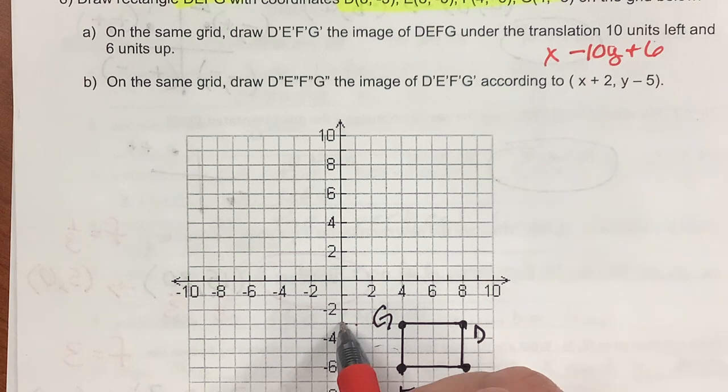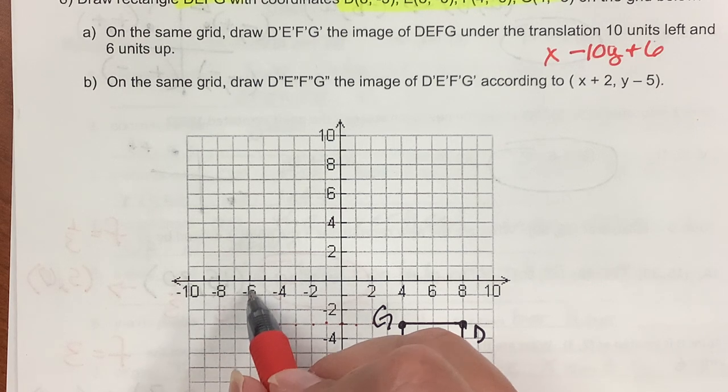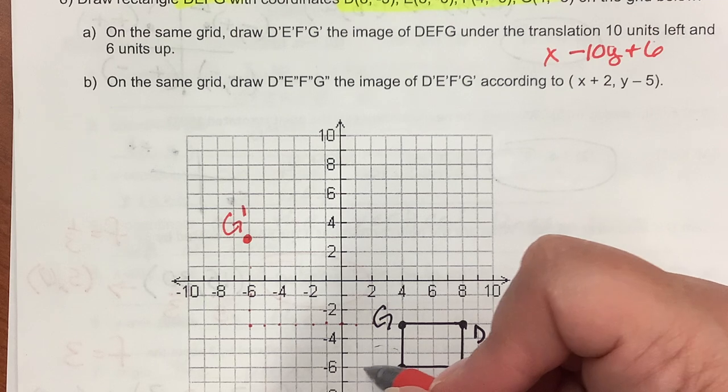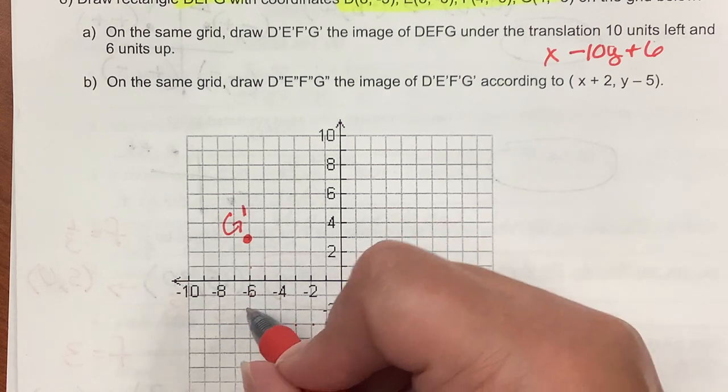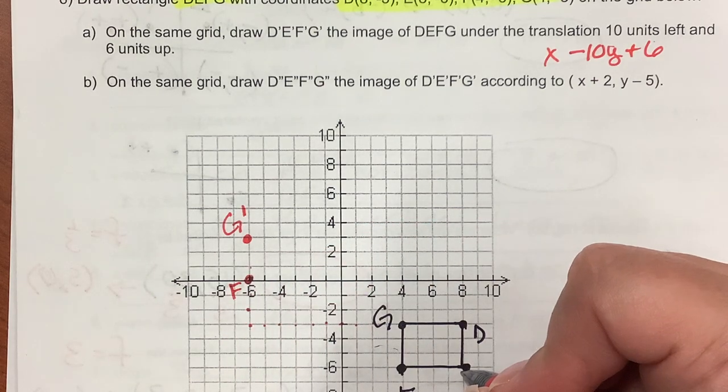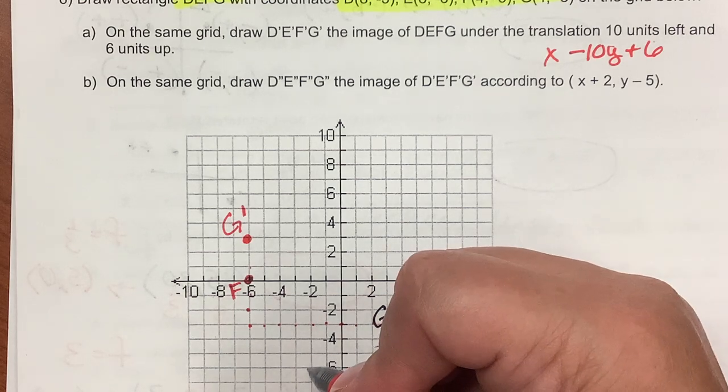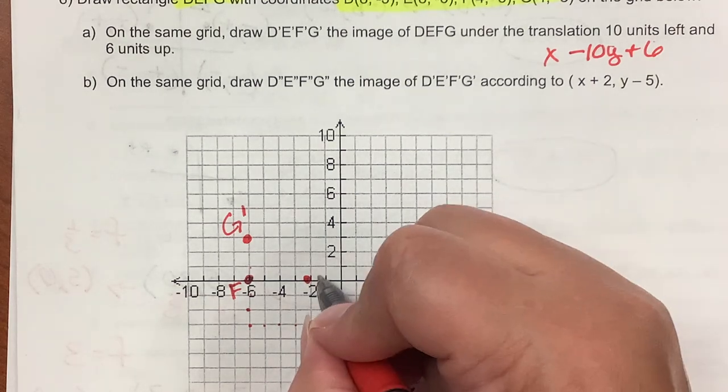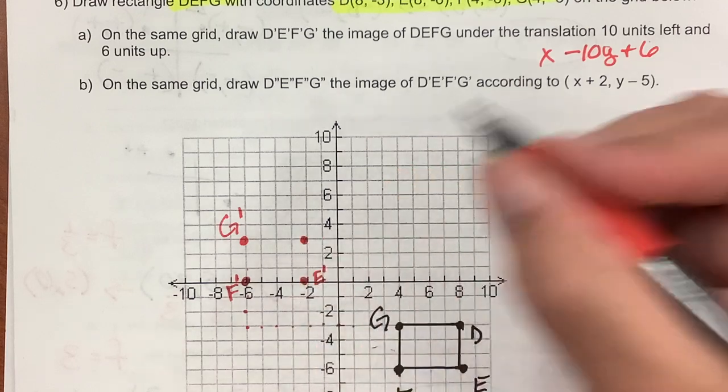Let's see. 1, 2, 3, 4, 5, 6, 7, 8, 9, 10, and 6 up - 1, 2, 3, 4, 5, 6. Here's my new G prime. Wait a second, I could do this easier. 8 minus 10 is negative 2, and I go to negative 2. Then I have negative 6 plus 6, that's 0. I could just use my letters. E prime, F prime, and D at negative 2, positive 3. D prime.